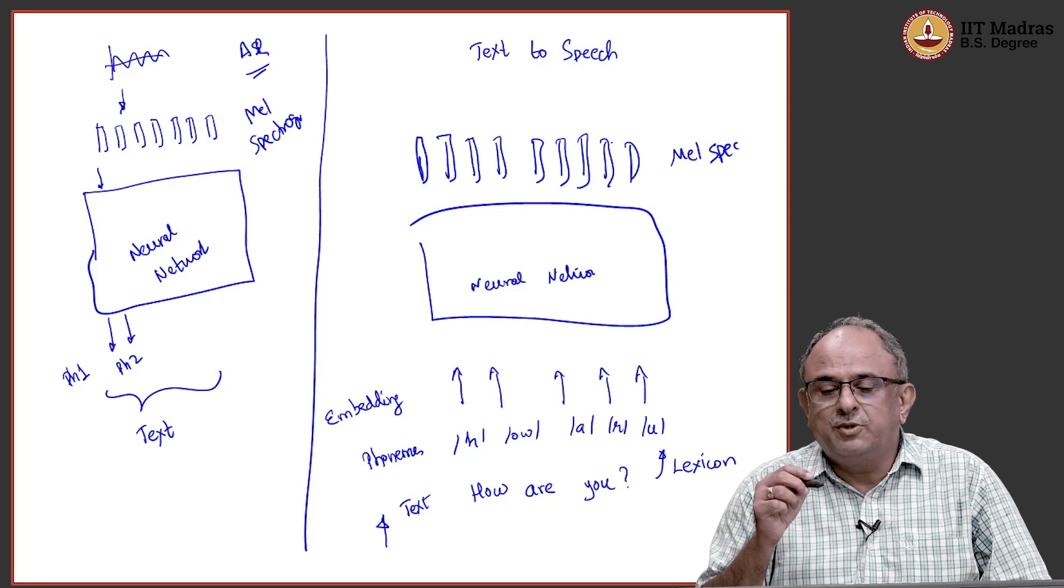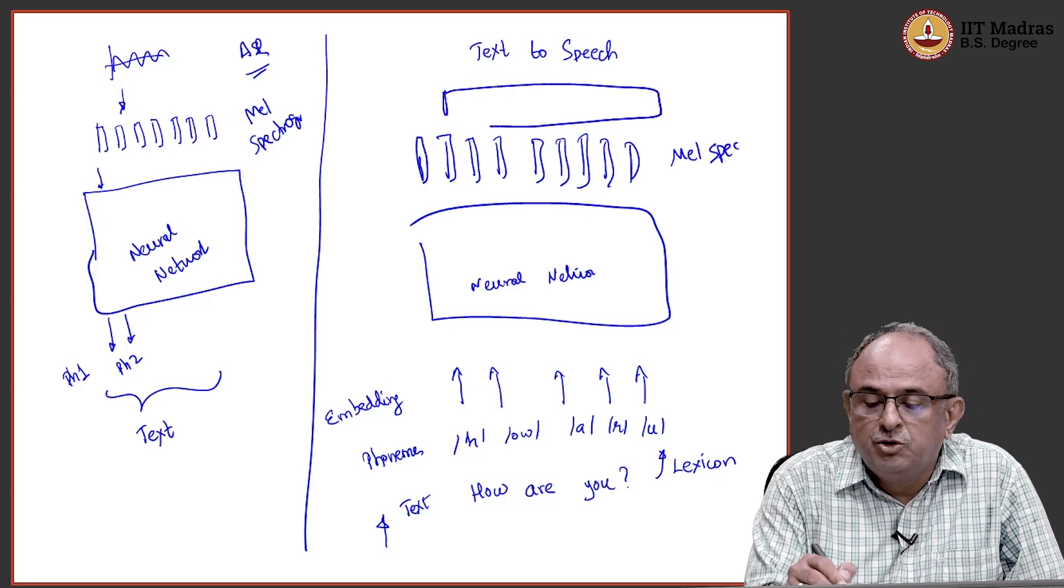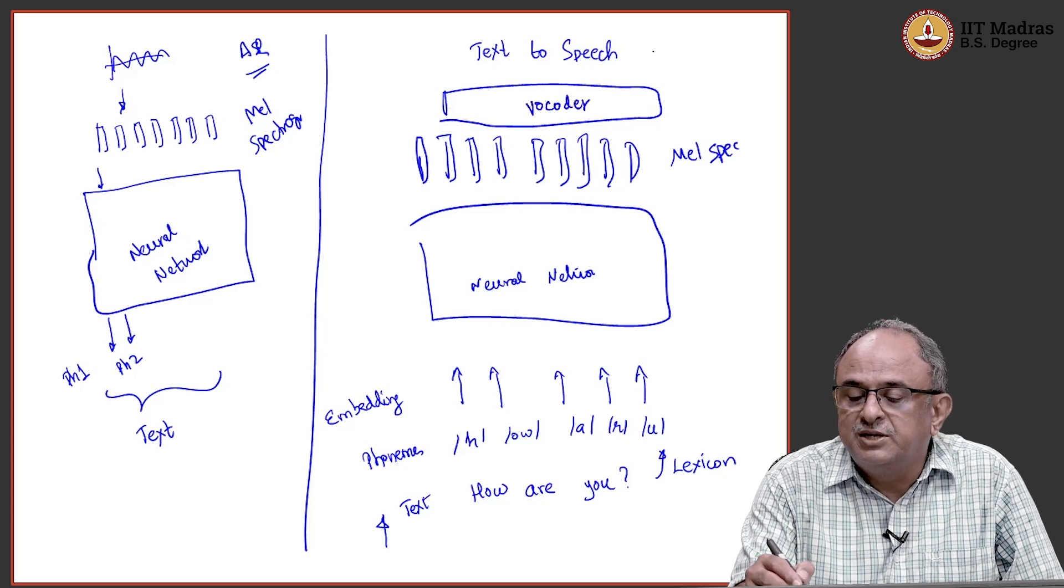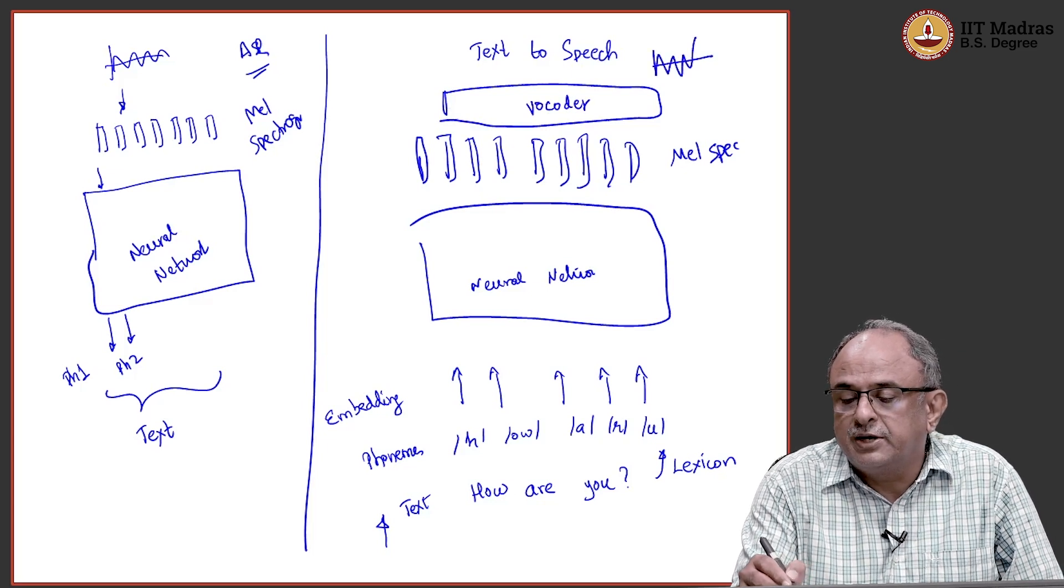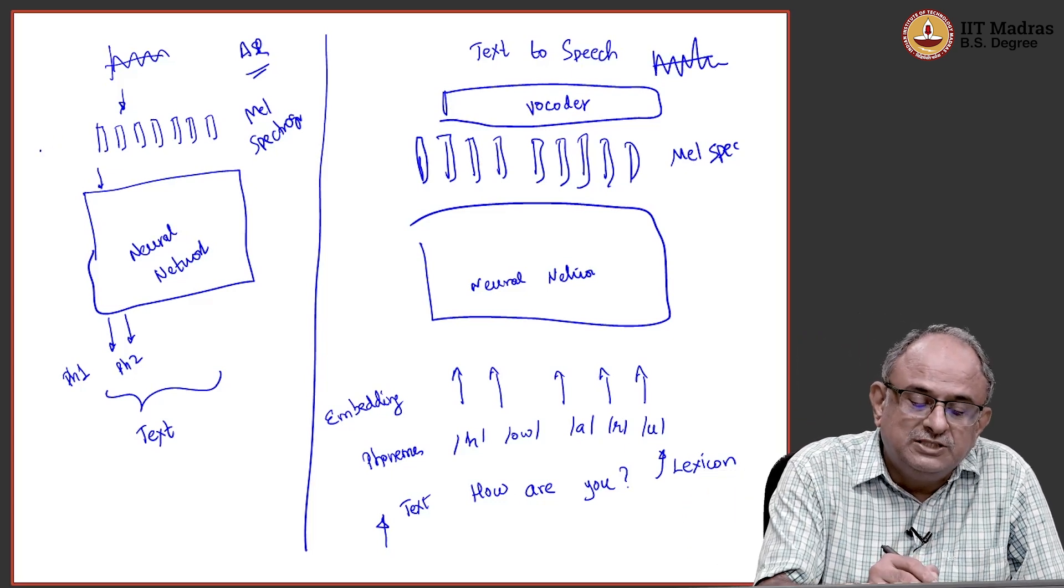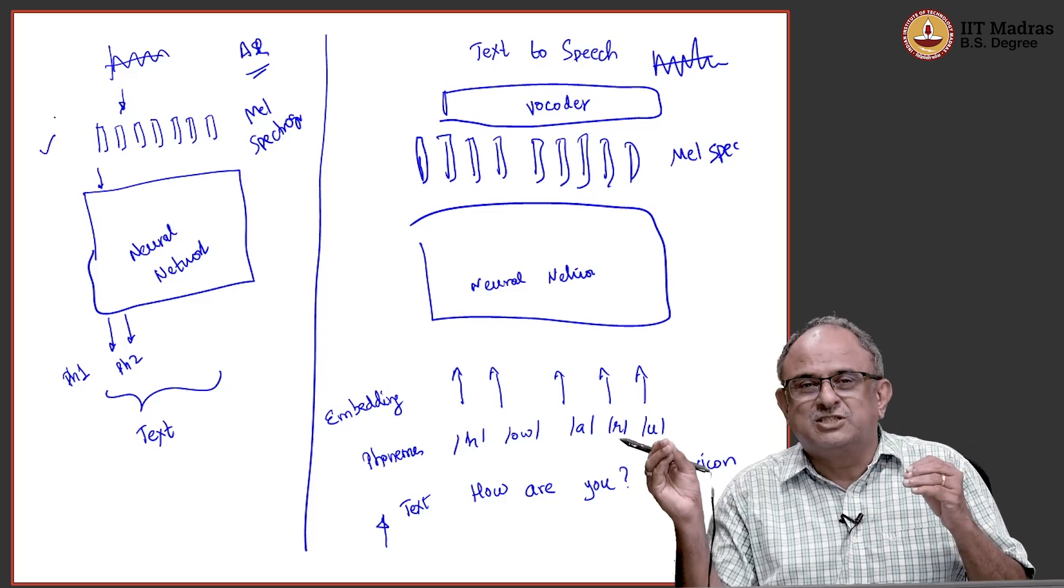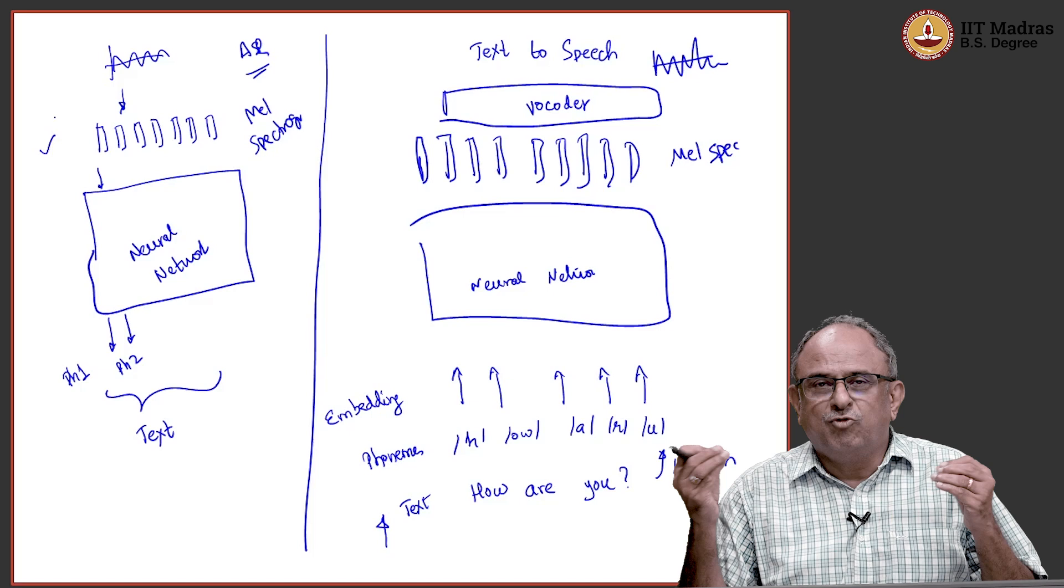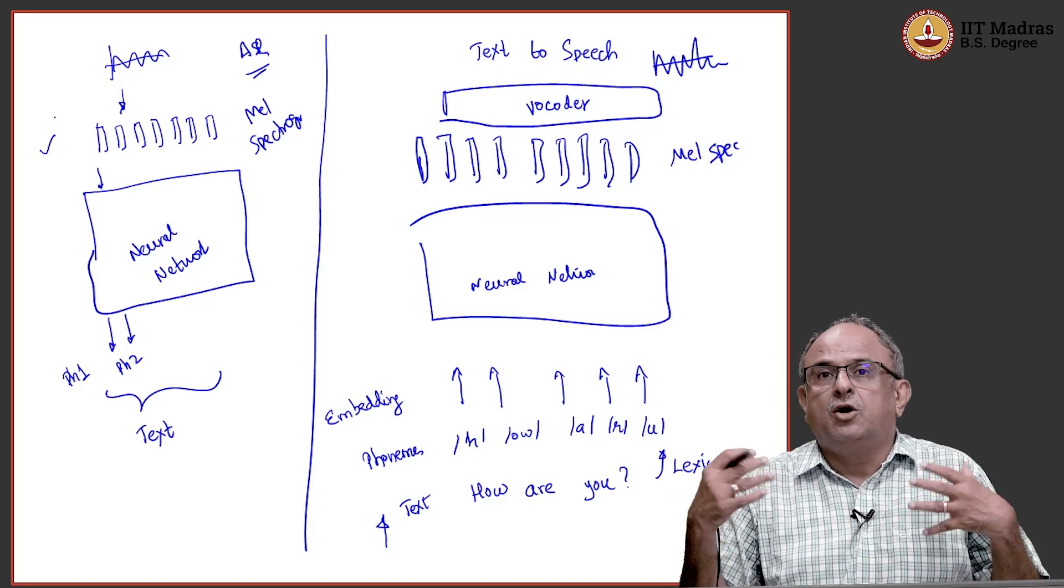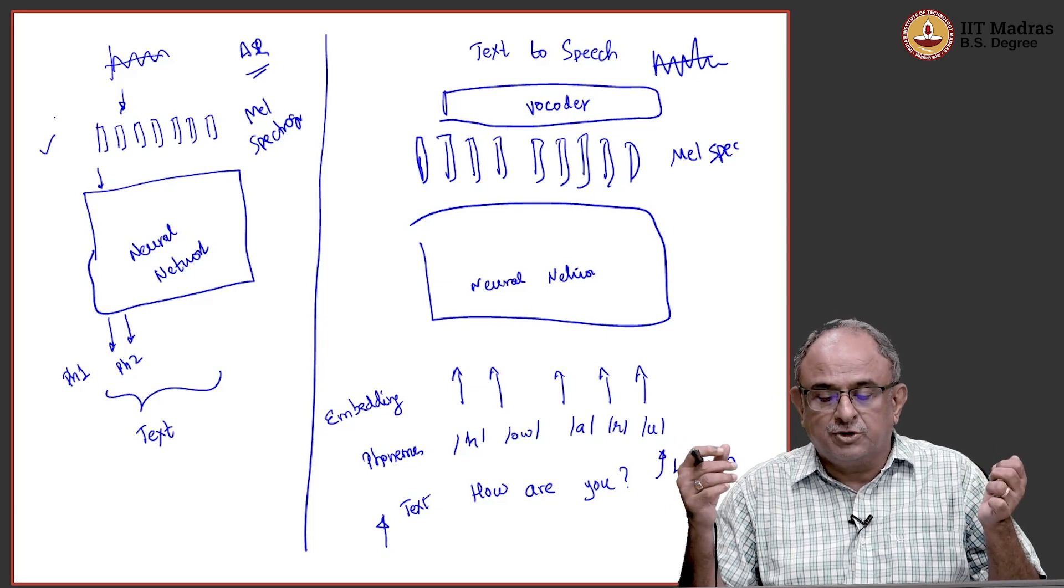In Mel spectrogram, we do not stop here. We need one additional neural network, which is called a vocoder and this will synthesize speech. The vocoder basically, Mel spectrogram is essentially capturing all the information. The vocoder has to get it into sample by sample form and vocoders can be quite easily trained. They are not very dependent on the speaker or even the language to some extent. So, vocoders are pretty robust.